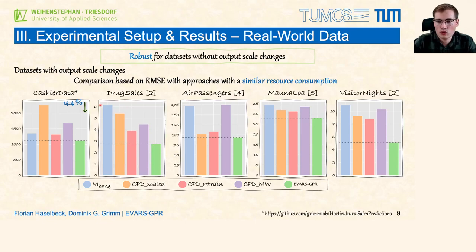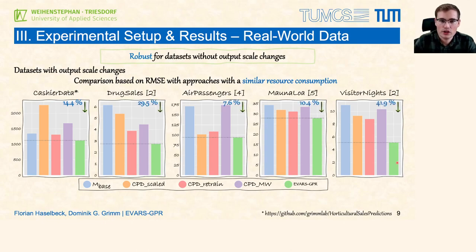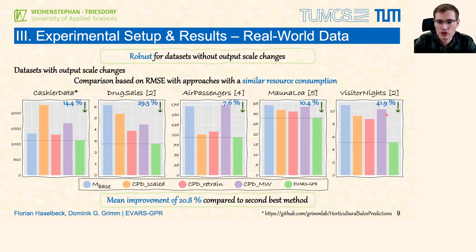We further included four common seasonal forecasting data sets from different domains. As you can see in all plots, EVOS GPR performed best in all cases. We outperformed the second best competitor by a margin of up to 41.9 percent, achieving a mean improvement of 20.8 percent compared to the second best methods.